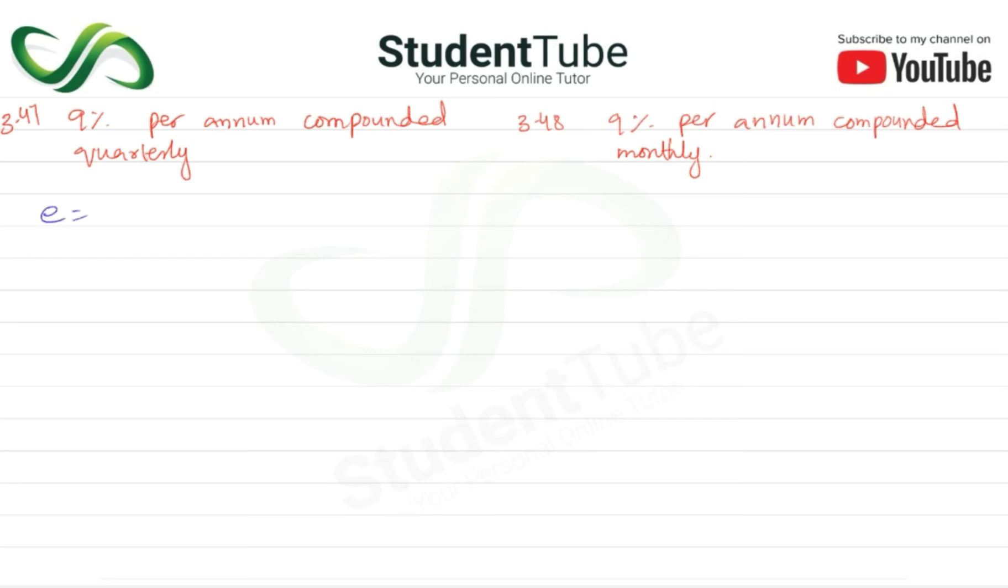So e is equal to 1 plus i upon m to the power m minus 1. So here 1 plus i is 0.09, m may come quarterly means 4, m i mean 4 minus 1.